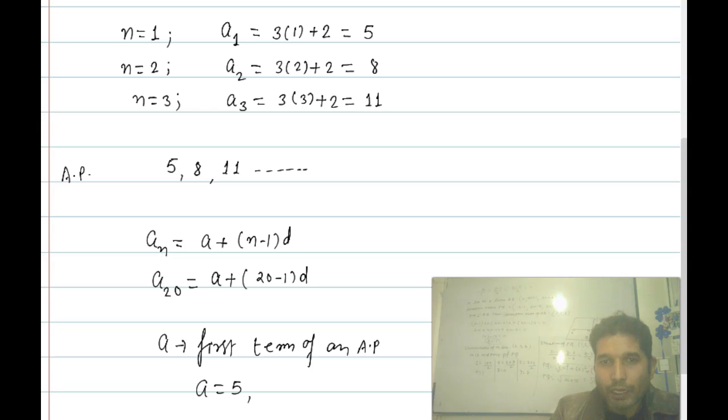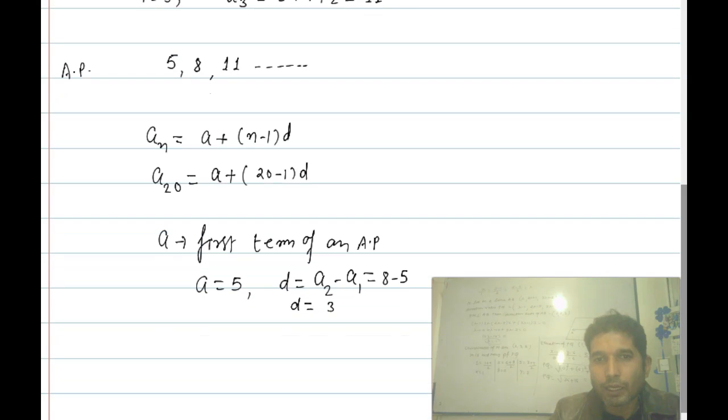And d is the common difference, that means second term minus first term. Second term 8 minus 5, so d is 3.